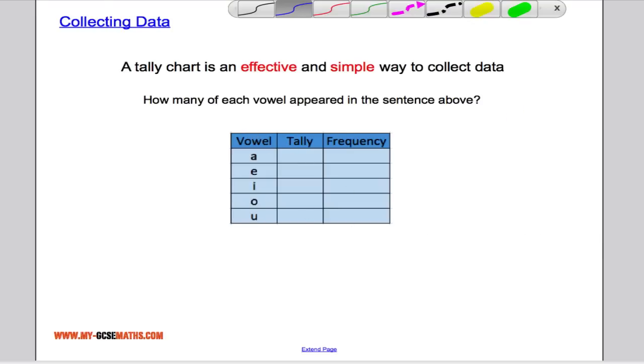So all I'm going to do is have a read through the sentence and tally up every time I see the letter A. So we've got 1, 2, 3, 4, 5, 6, 7 and 8. So the letter A appears 8 times.